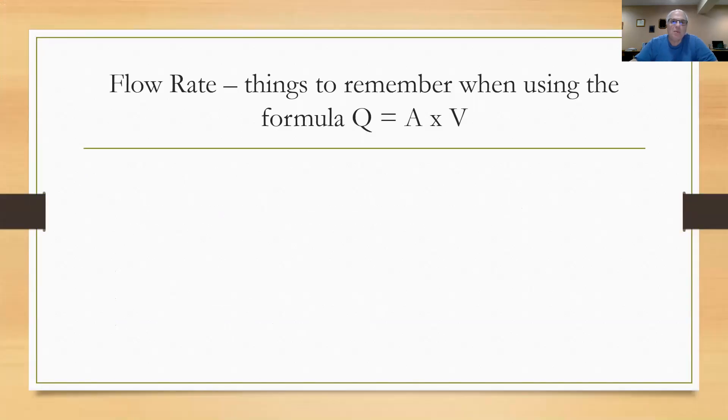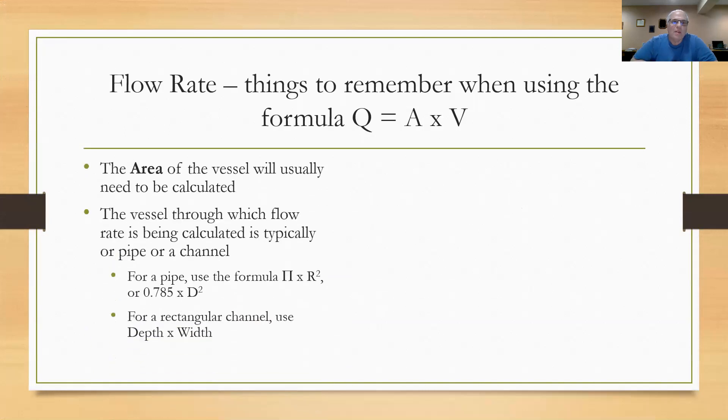So here's some things we need to remember when we do Q equals A times V. The area of the vessel usually needs to be calculated. In the last example I gave you, I went ahead and calculated the area beforehand, but normally in a problem they give you, you're going to have to calculate the area. The vessel through which the water is flowing is typically going to be a pipe or a channel, and you're going to have to know the formulas to calculate the square area. For a pipe, it's pi r squared, or 0.785 times the diameter squared. For a rectangular channel, you use depth times width.